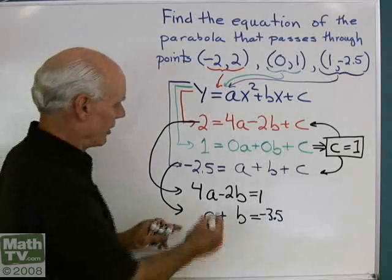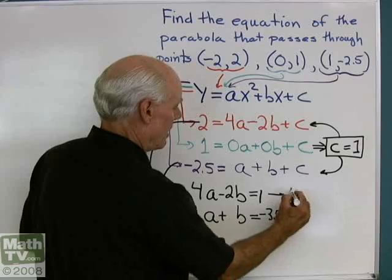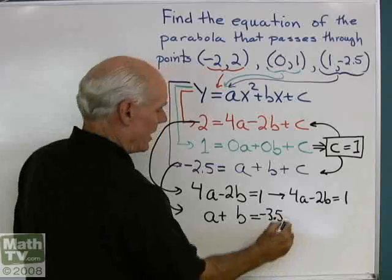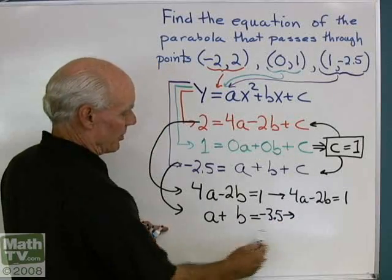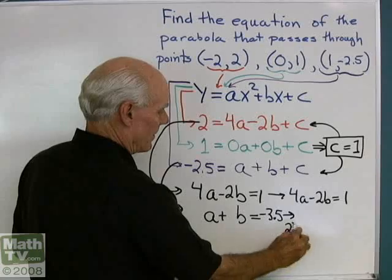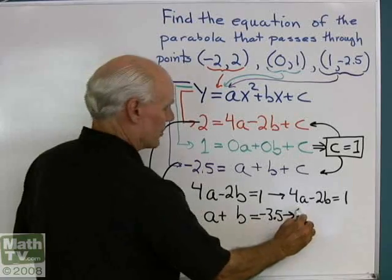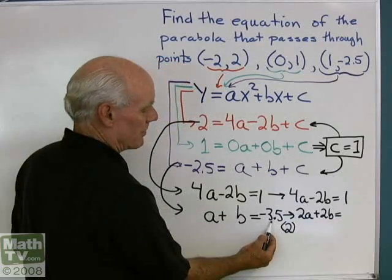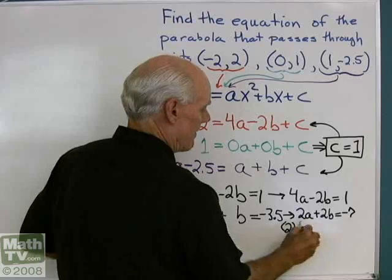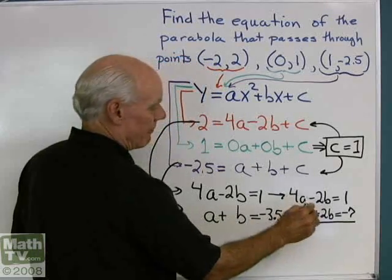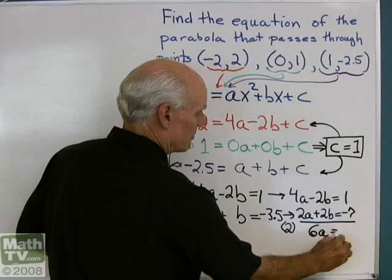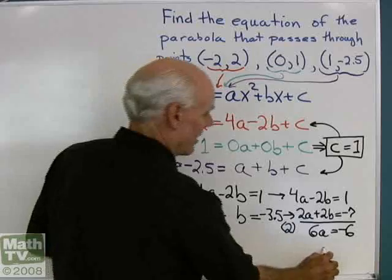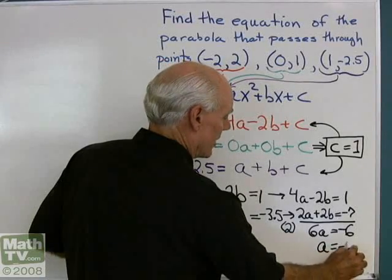Let's see what we can do with that. I'll leave the first one the same: 4a minus 2b equals one. The second one I'll multiply both sides by two, giving 2a plus 2b equals two times negative 3.5, which is negative seven. Adding them up: 4a plus 2a is 6a, equal to one plus negative seven, which is negative six. So a is equal to negative one.